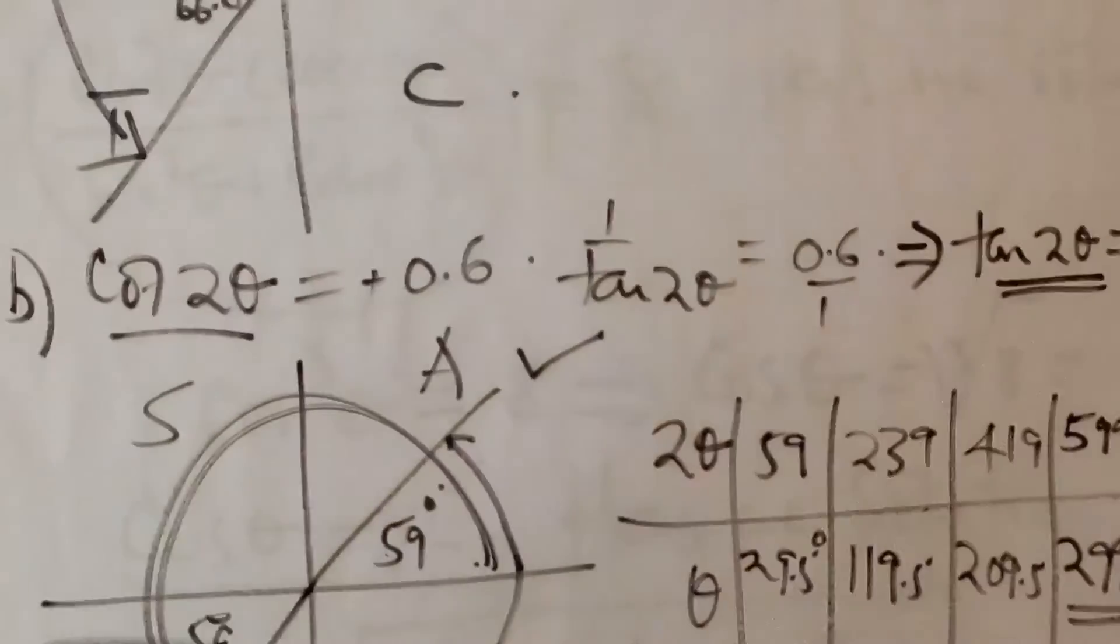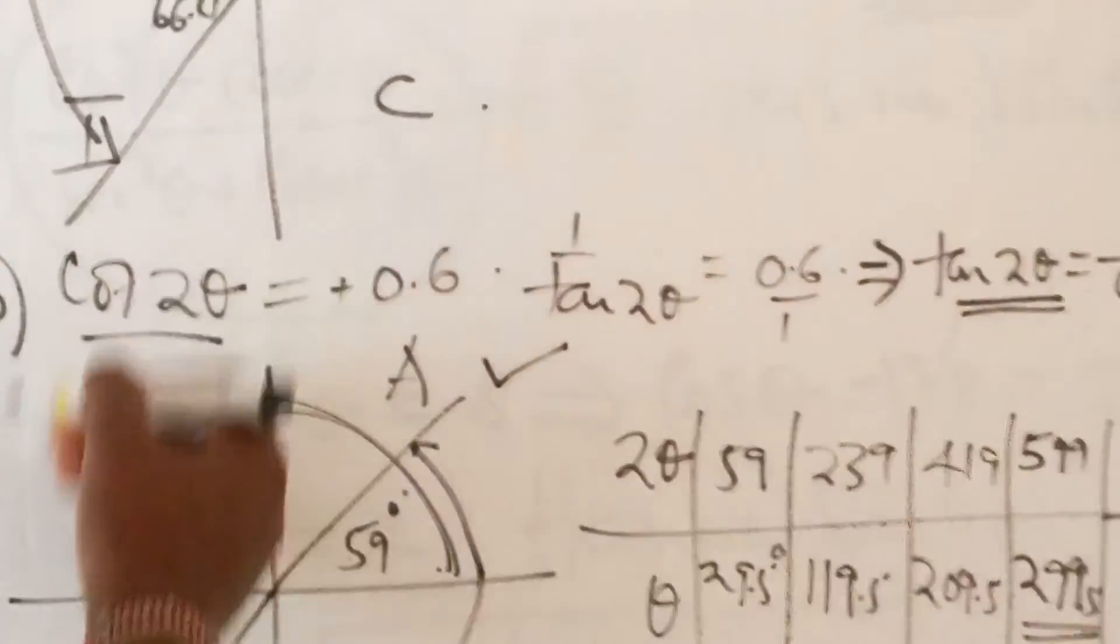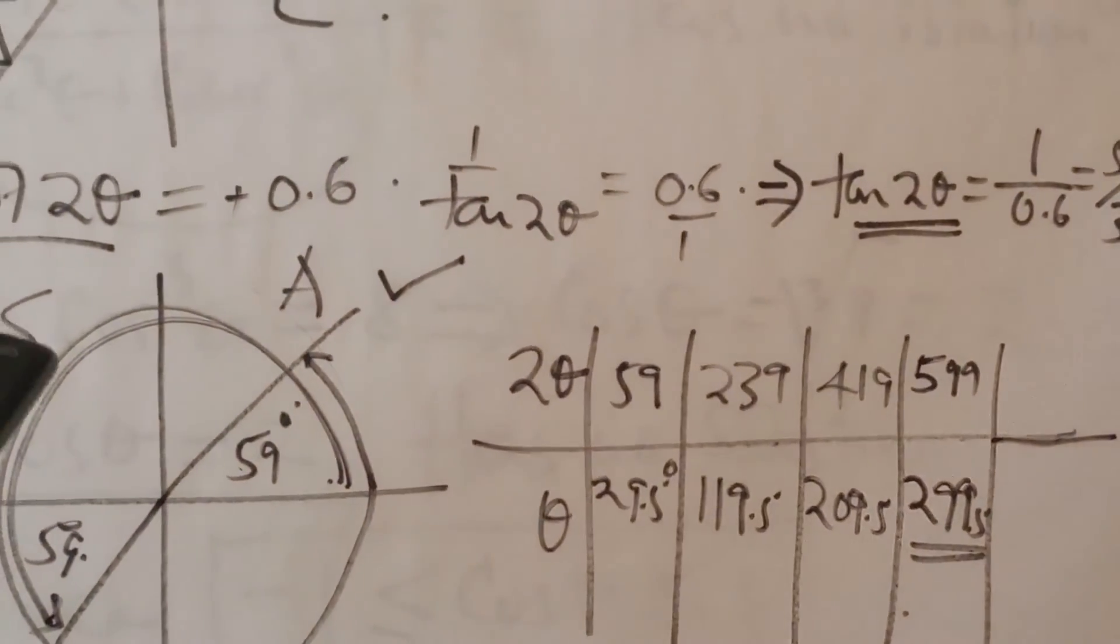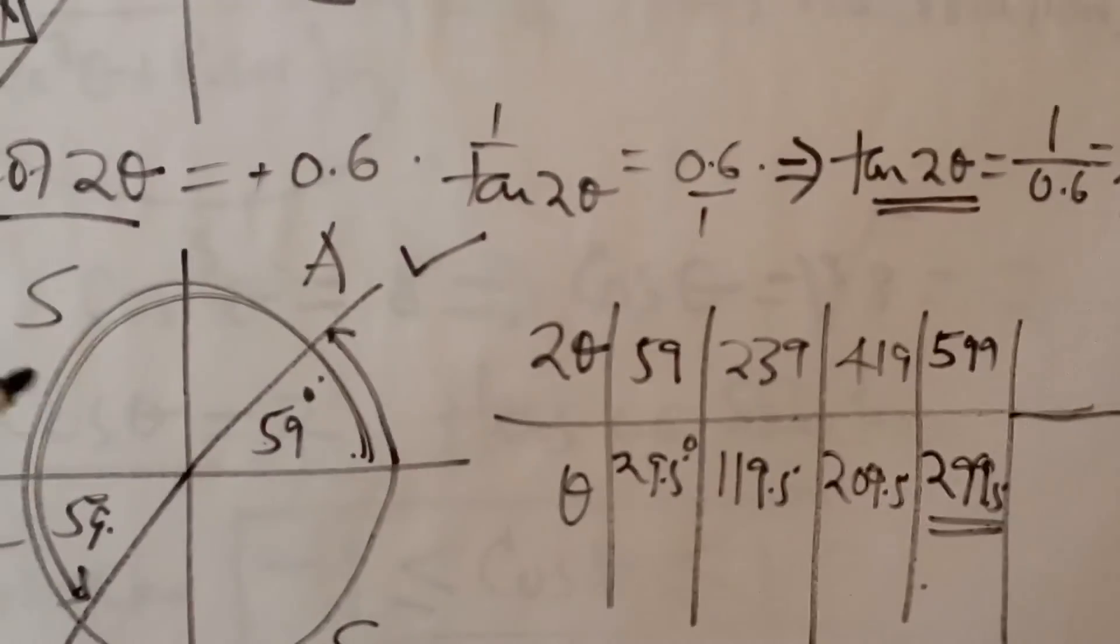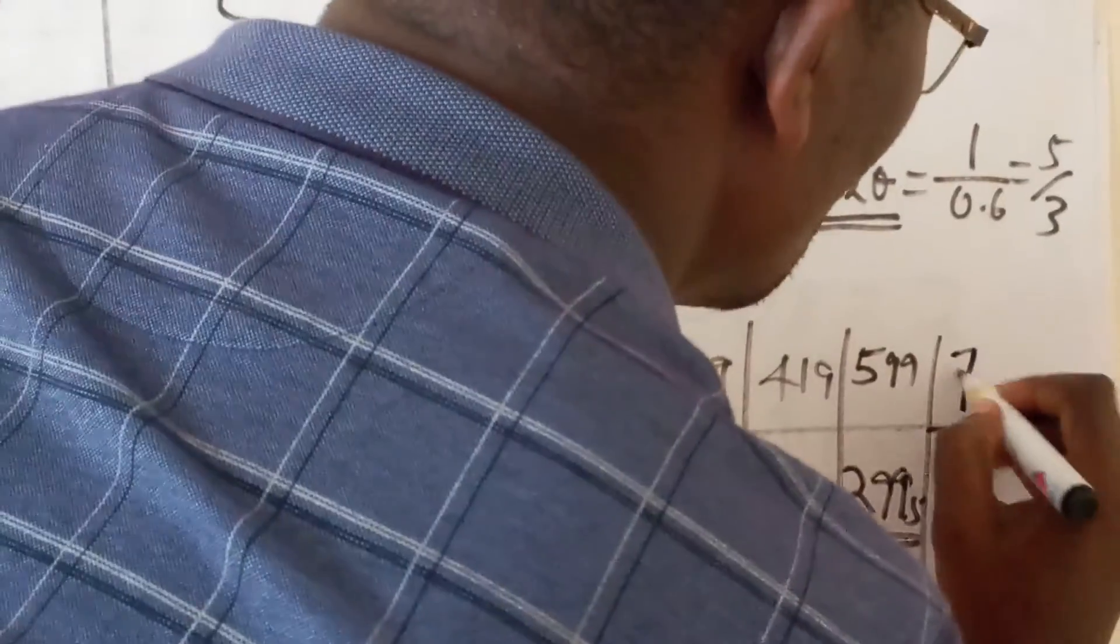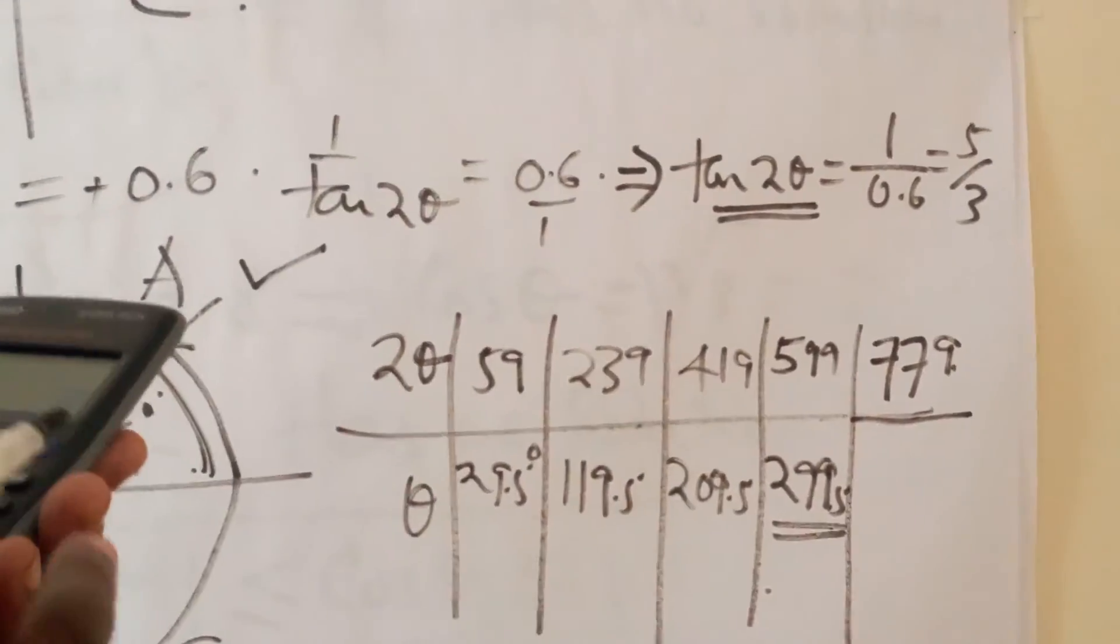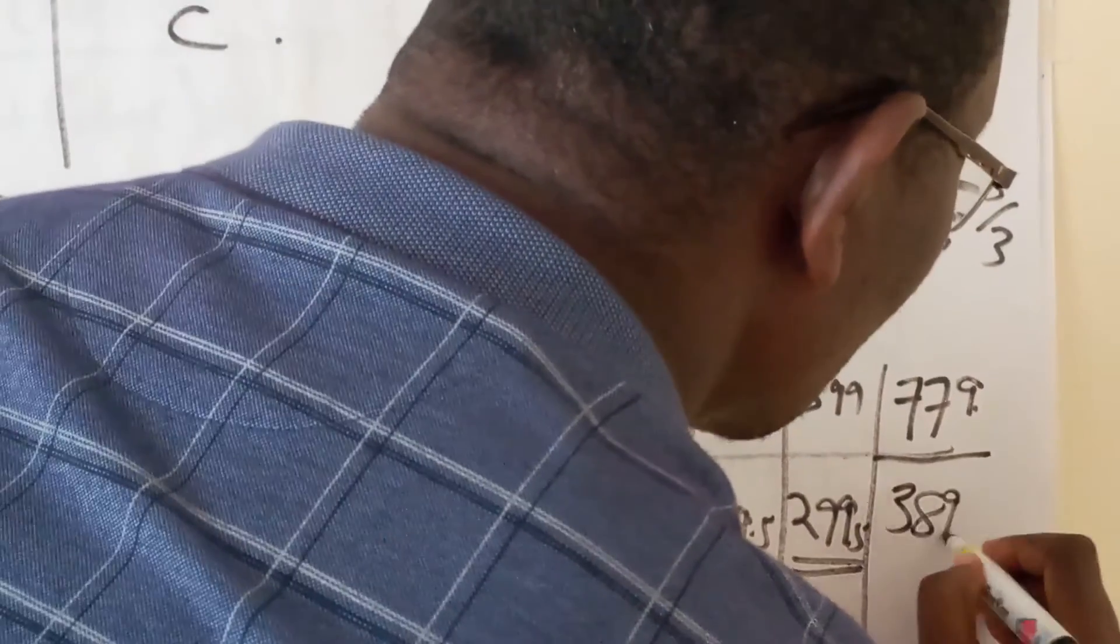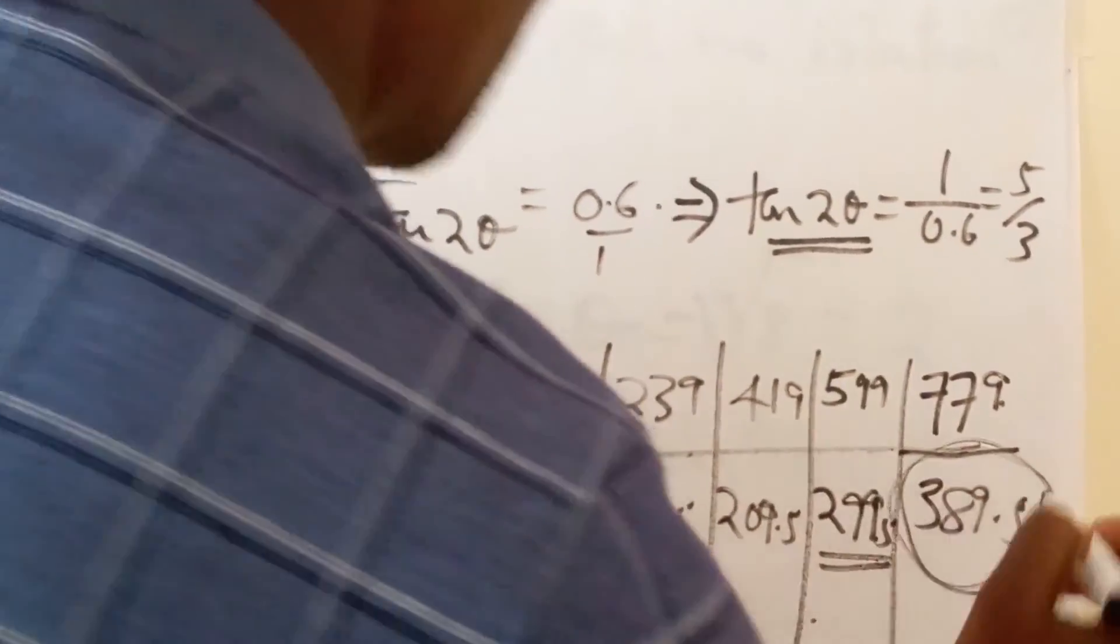I don't know whether we can move on further, but let's just try. The second round, 720 plus 59, and we get 779. If we have 2 theta to be 779, then divide that by 2 to get theta, is going to be 389.5. And you realize that this one is outside the range.